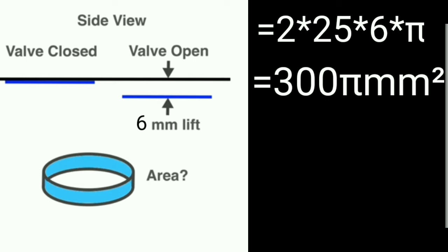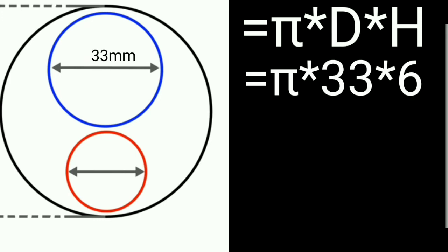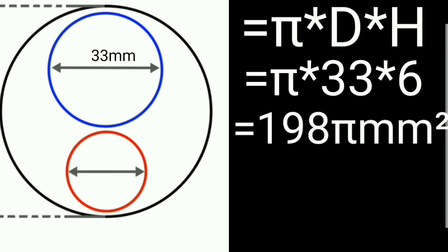For the two valve cylinder, the same formula applies but with only one inlet valve, reducing to π × d × h. Multiplying the inlet valve diameter of 33 mm by the lift of 6 mm by π gives a result of 198π mm². We assume the same valve lift for both the four valve and two valve systems.